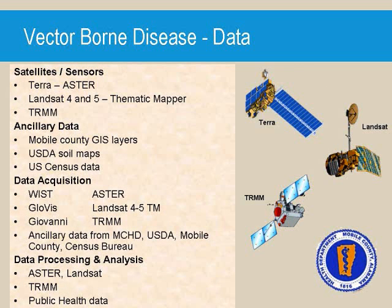The satellites and sensors that were used were ASTER from the Terra satellite, the Thematic Mapper on the Landsat 4 and 5 satellites, and TRIM data. Ancillary data, which included Mobile County GIS layers and census data, were acquired from the Mobile County Census Bureau and other sources as seen on this slide. The data was acquired from several locations, including WIST, GLOVIS, Giovanni, and USDA.